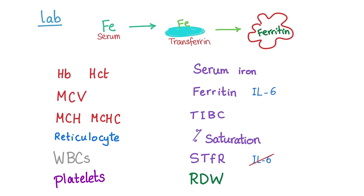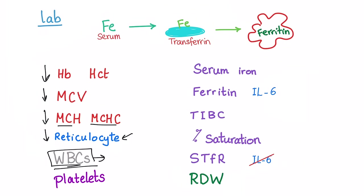Hematology is all about lab results. Iron in the serum gets onto transferrin, the binding protein, then gets stored in tissue as ferritin. In iron deficiency anemia: hemoglobin and hematocrit are both decreased. MCV is low since it's microcytic. MCH and MCHC are also low. Reticulocytes are low because there isn't enough iron to make mature or even immature RBCs.